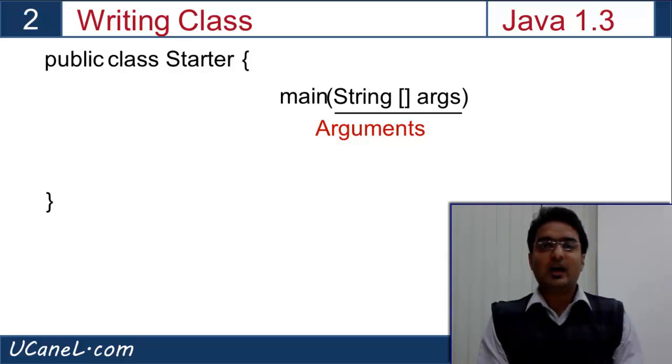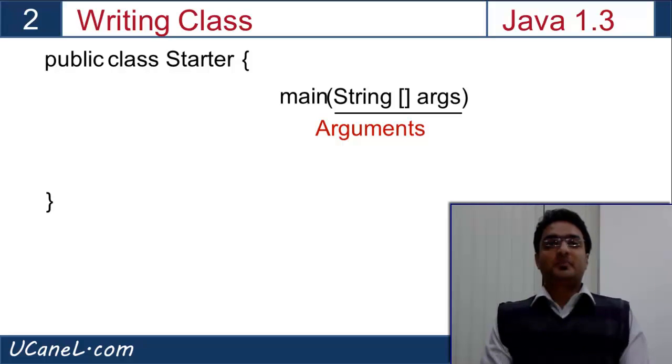Right now, I have given the argument as string array. What is a string array? We will see in an upcoming class. In simple terms, it's a collection of strings, like a collection of names: Saurabh, Vikas, Abhinav, Tapan, and so on.